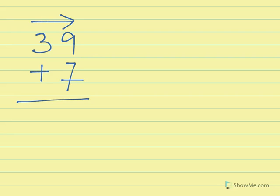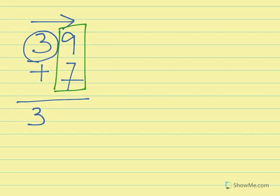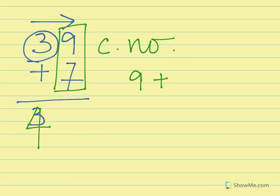We have to check whether 9 plus 7 is a carrying number. Since 9 plus 7 equals 16, it is a carrying number, so the 3 in the tens position increases to 4. The n number of 9 plus 7 is 6. So our final answer is 46.